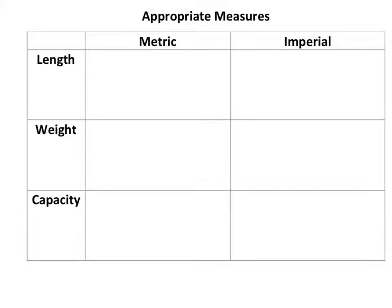For length, in metric you're looking at millimetres, centimetres, metres, and kilometres. Millimetres are very small, centimetres not quite so small. You measure people in metres or centimetres, and kilometres is used for distances between towns and stuff like that.